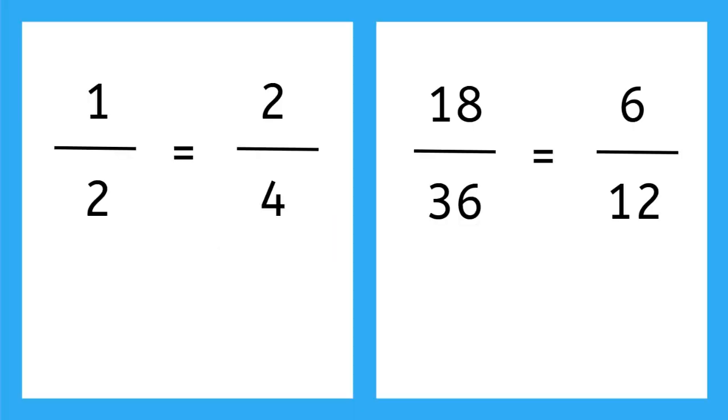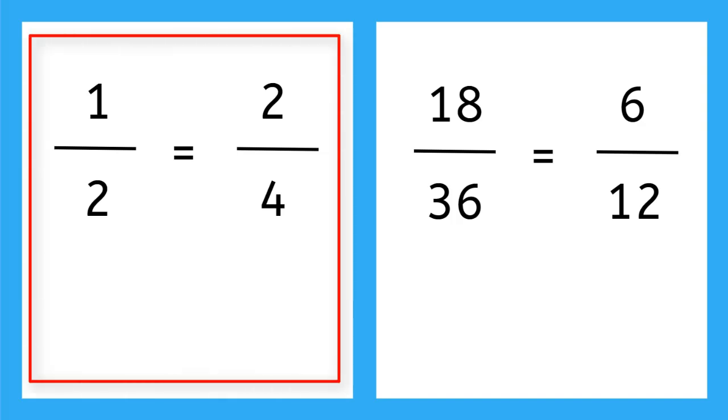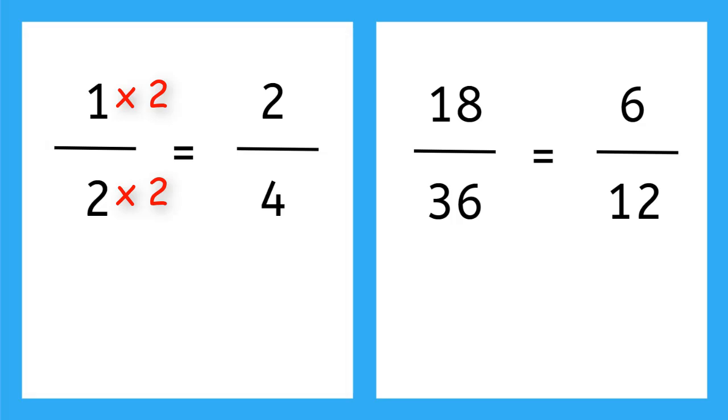Equivalent fractions have the same value, even if they look different. These fractions here have the same value because when you multiply the top and the bottom by the same number, it is the same as multiplying by 1, and the fraction keeps its value.